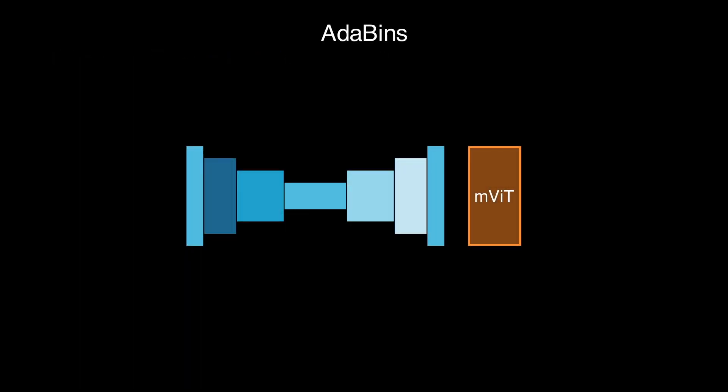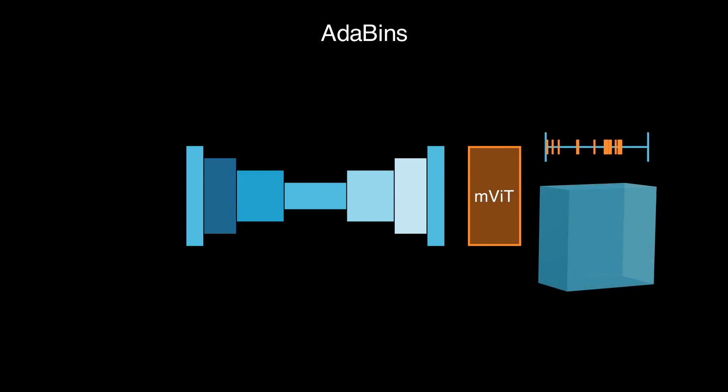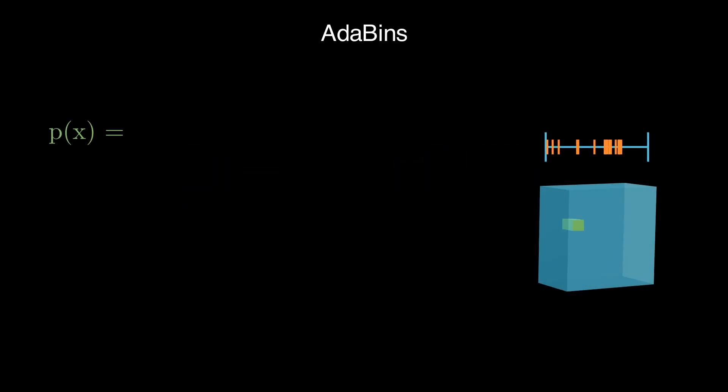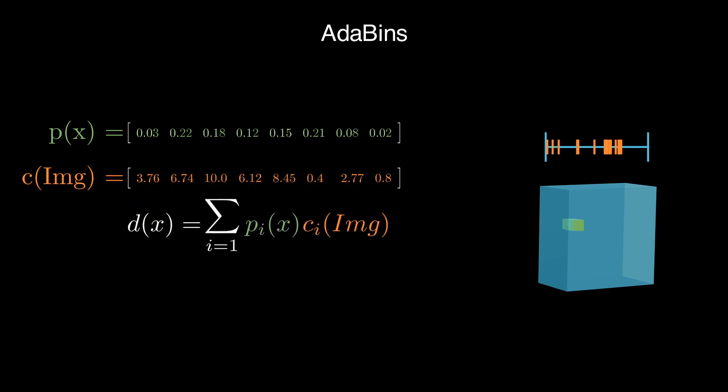AdaBins uses a combination of a convolutional unit and a small transformer. The output depth at a pixel is computed by taking the linear combination of the probabilities at that pixel and the bin centers for that image. The linear combination gets around the discretization and we end up back with a continuous prediction.